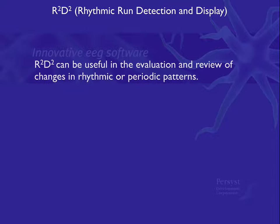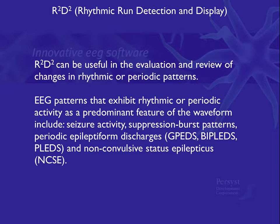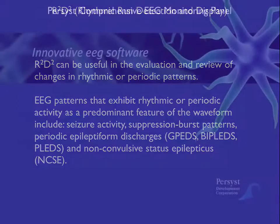R2D2 can be useful in the evaluation and review of changes in rhythmic or periodic EEG patterns. EEG patterns that exhibit rhythmic or periodic activity as a predominant feature include seizure activity, suppression burst patterns, periodic epileptiform discharges — for example GPEDs, BIPLEDs, and PLEDs — and non-convulsive status epilepticus.